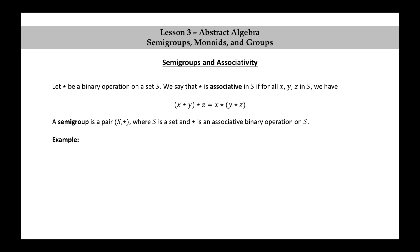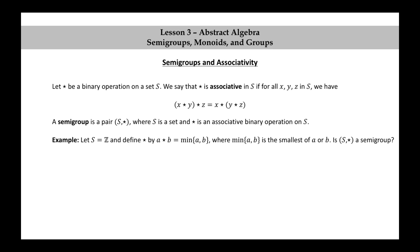Let's look at another example. Let S equal the set of integers and define star by A star B equals min(A, B), where min(A, B) is the smallest of A or B. Is S star a semi-group? Yes it is. We already saw that star is a binary operation on the set of integers. We just need to check associativity. There are actually six cases to consider. We'll do a couple in detail and then mention the others so you can try them on your own.